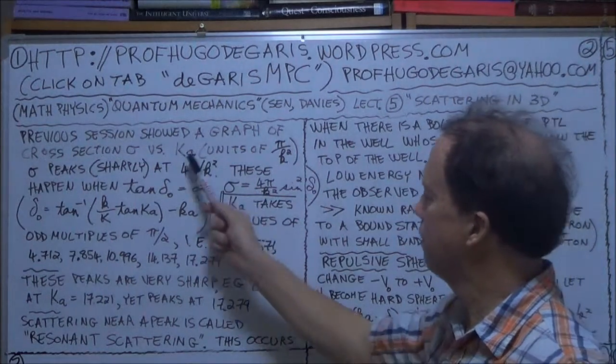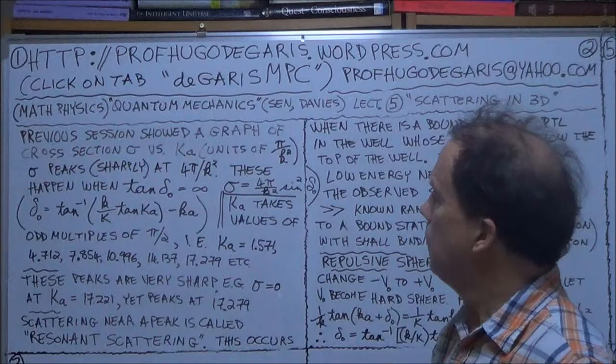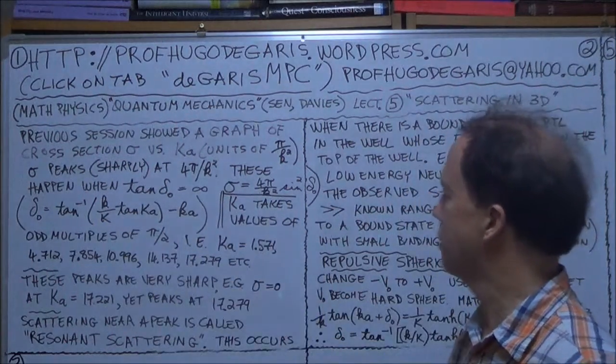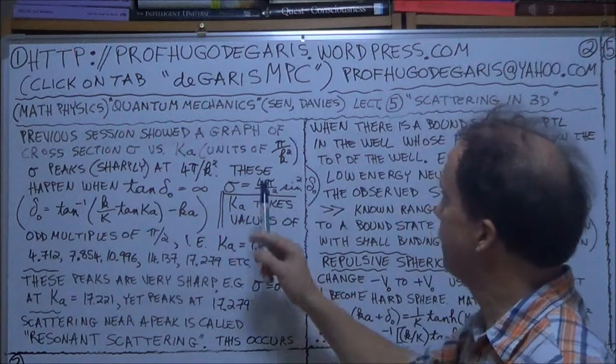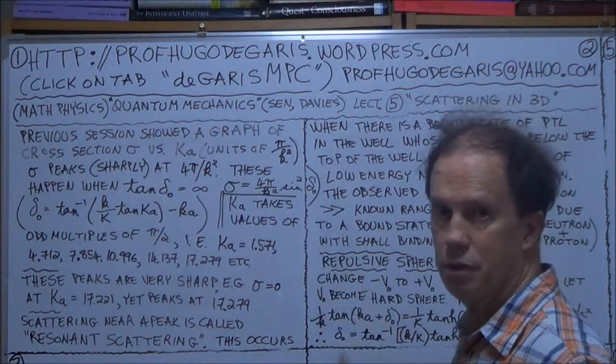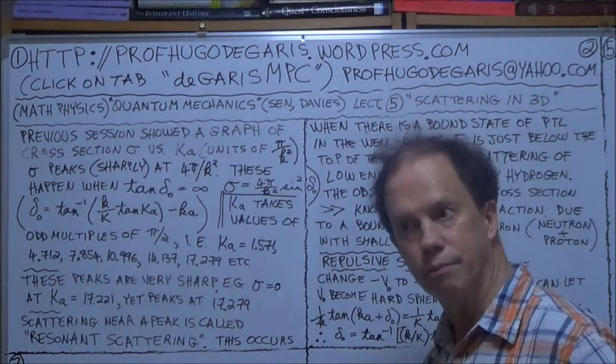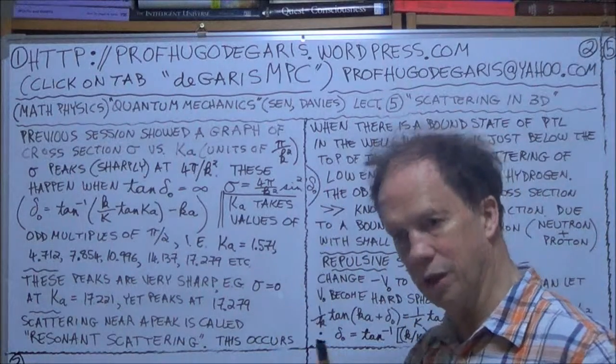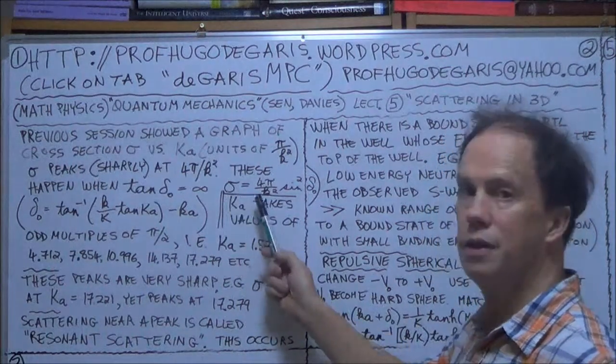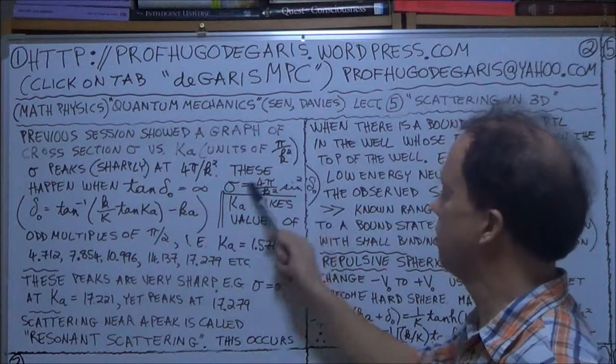Now, we can mathematically deduce why that's the case. I've written down two of the formulas from the previous session. Firstly, remember the relationship between the total cross-section and the delta 0, the phase change for when your angular momentum quantum number of little l is 0, so you're talking about S wave, spherical wave. So it was sigma is 4 pi over little k squared, sine squared of delta 0.